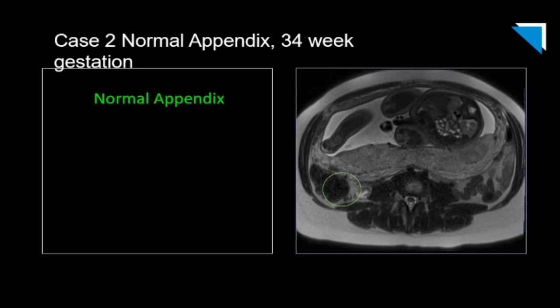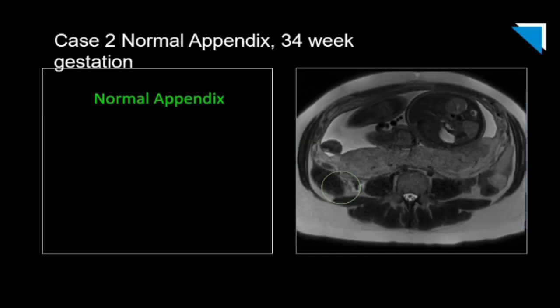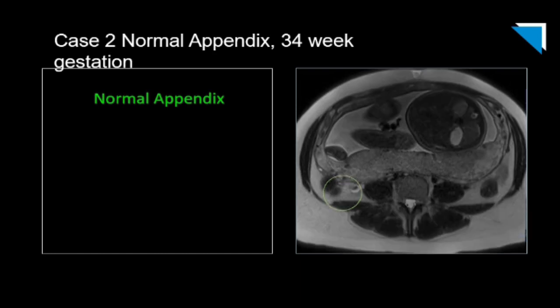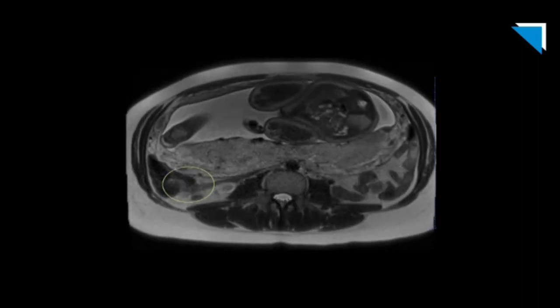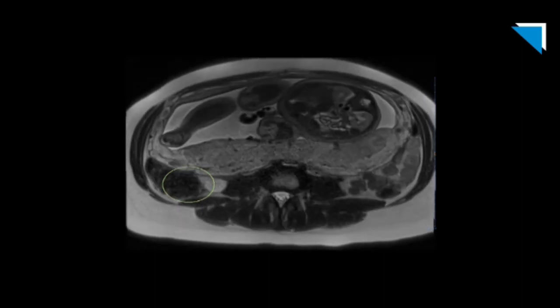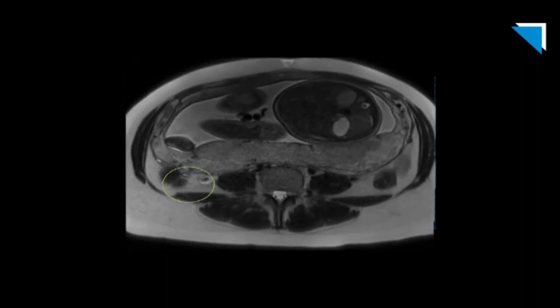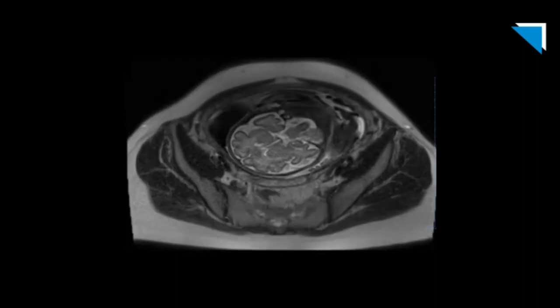Our second case of a normal appendix is later on at 34 weeks gestation. Here we see the appendix, again retrocecal in location, but also much higher — more superior in the patient — as the appendix and cecum tend to move upward the later on in gestation. It's a nice thin appendix, and although there's some fluid in the lumen, there's no adjacent inflammatory change or fluid to suggest appendicitis. Here's the axial T2 cine clip showing the normal retrocecal appendix, and here's the coronal T2 series where you can see how much more superior the appendix is later on in pregnancy.